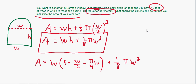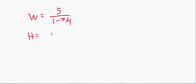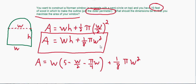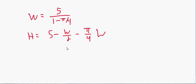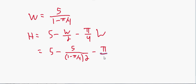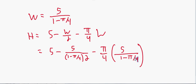Since they asked for the dimensions, we also need to find h. Recall h = 5 - w/2 - (π/4)w. We plug in w = 5/(1 - π/4), giving h = 5 - [5/(1 - π/4)]/2 - (π/4)[5/(1 - π/4)]. You could convert to decimals to make this easier. These are the dimensions that maximize our area.